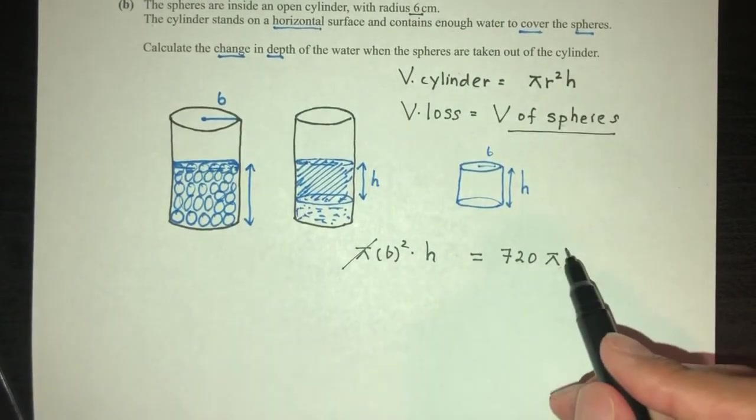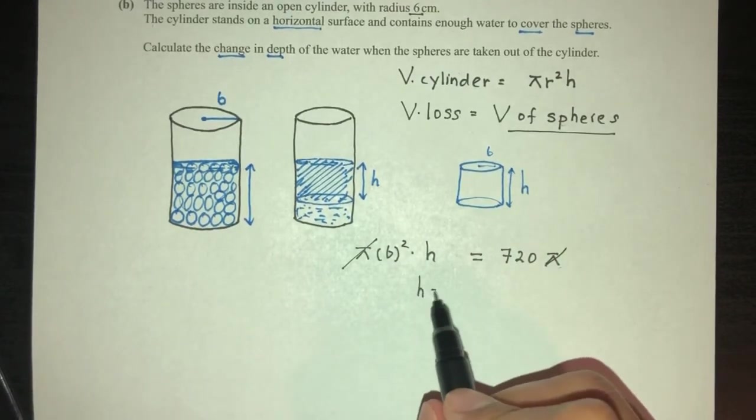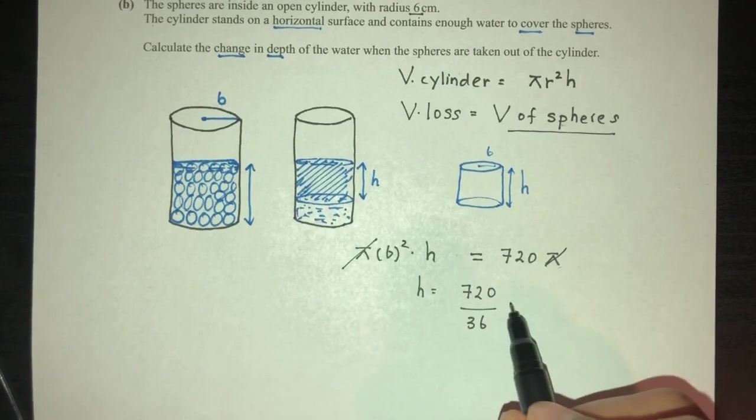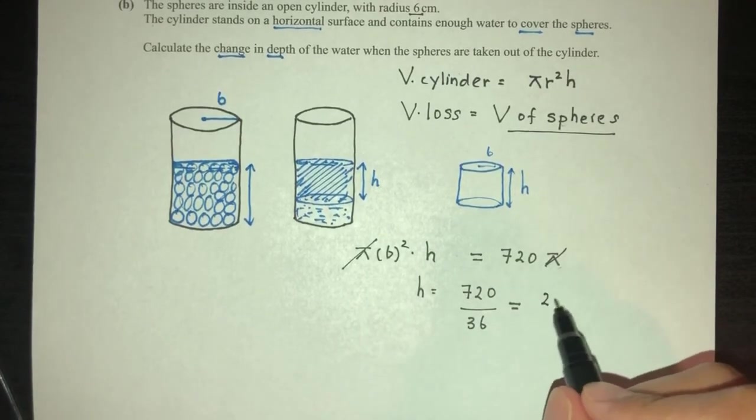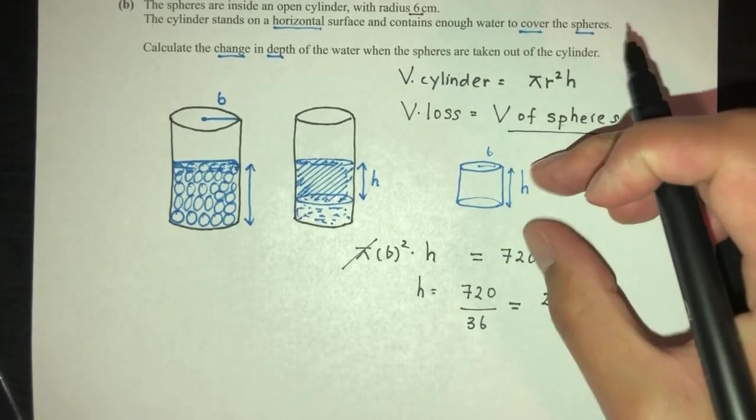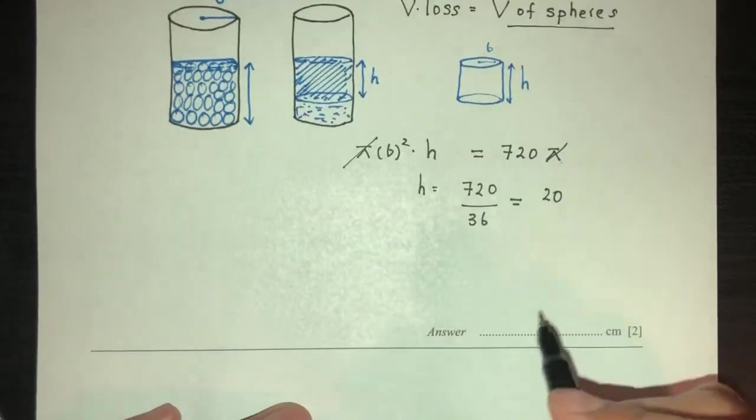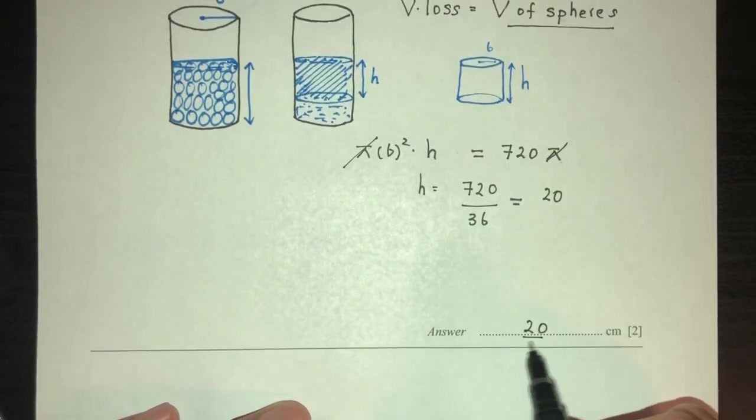Pi will cancel out. h will be 720 divided by 36. And that will be equal to 20. So, this loss of volume is a height of 20. That is a change in height for this one.